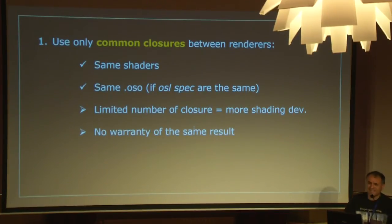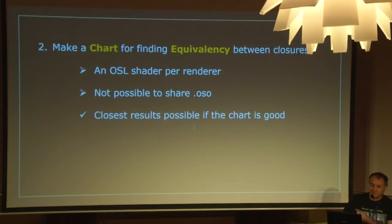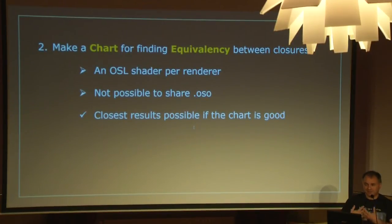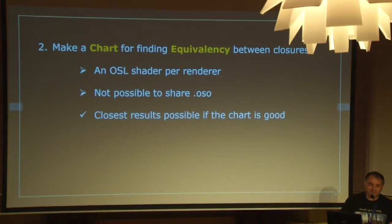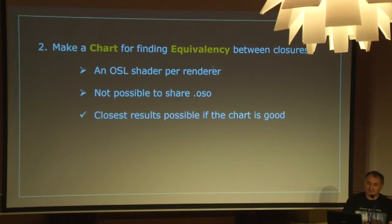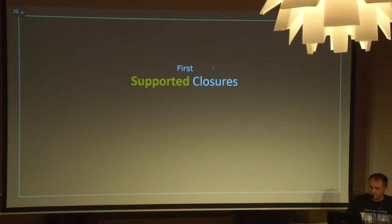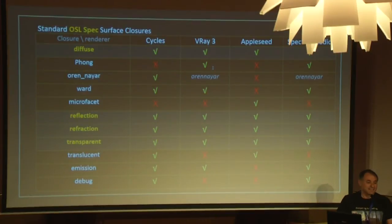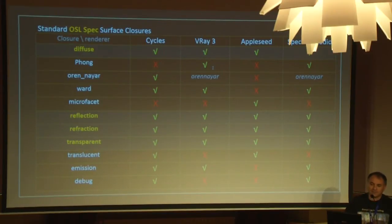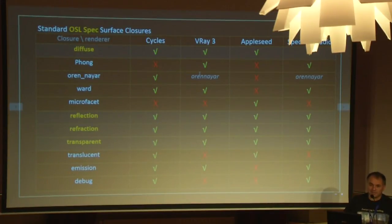You make a shader using just diffuse, for example, pre-compile it in Blender, take the .oso file and use it in AppleSeed — it works perfectly. Indeed, there is really a small number of common closures. So if you want very specific things, you have to do it yourself — you have to develop more and write bigger shaders. And bigger shaders means slower shaders.